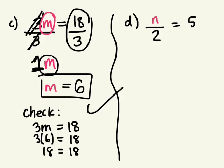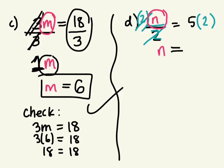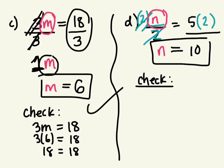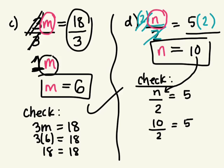We have a number divided by 2 is equal to 5. What's the opposite of dividing something by 2? The opposite of division is multiplication. If I multiply this whole thing by 2, it will cancel out — 2 divided by 2 is 1. Because I multiplied the left side by 2, I have to do the same to the right side: whatever you do to the left side, you have to do to the right side. So I'm left with just N on the left. What's 5 times 2? 10. N equals 10. The original question said a number divided by 2 is equal to 5 — if that number is 10, is 10 divided by 2 equal to 5? 5 equals 5. Yes, it balances.